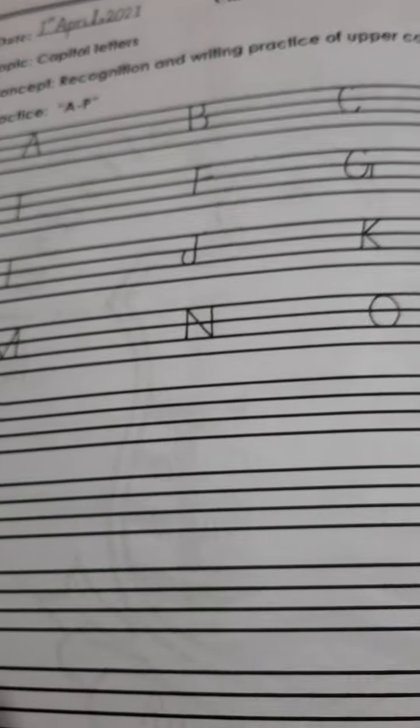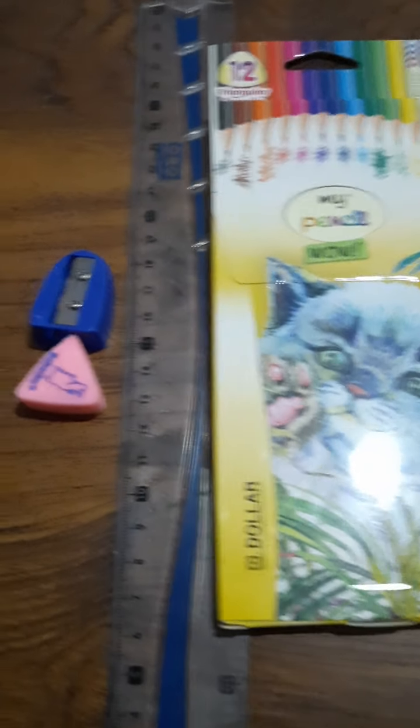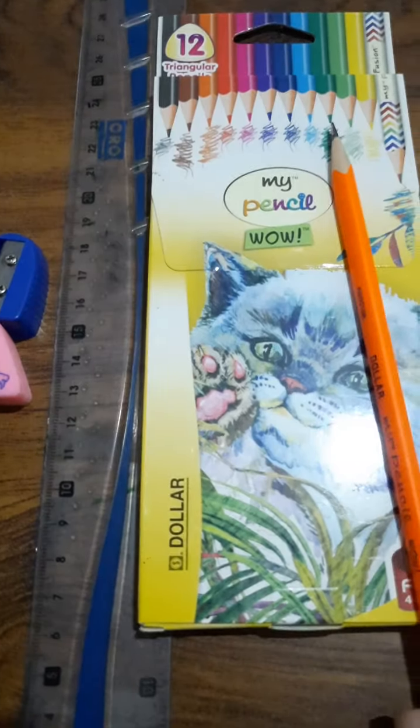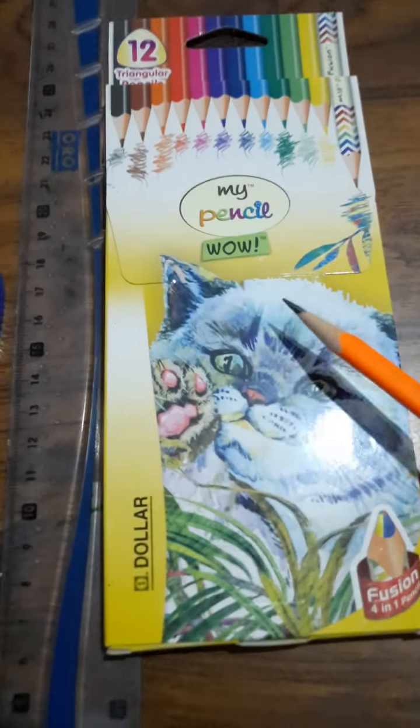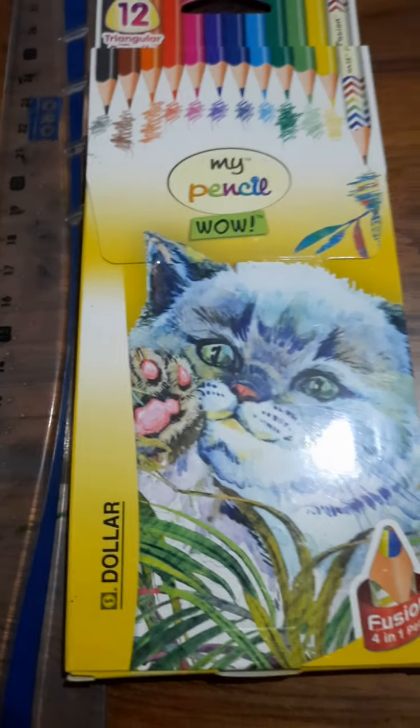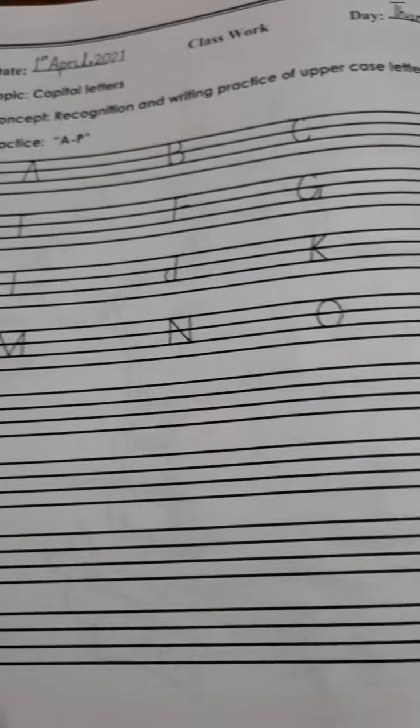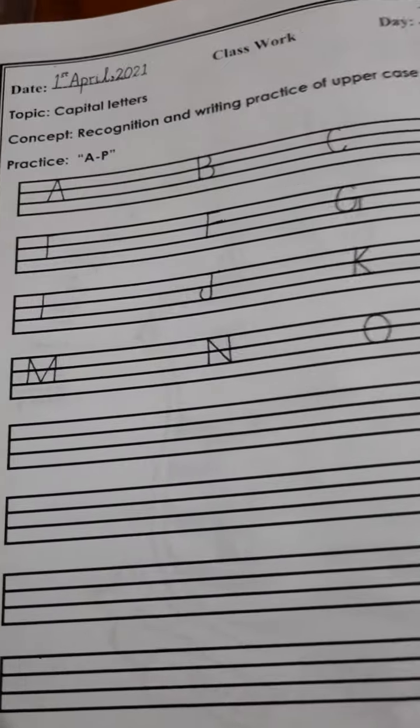Before start your working, complete your stationery. In your geometry box, you have one pencil, razor, sharpener, scale, and colored pencil. Mean to say, you have to complete your stationery and start your working.